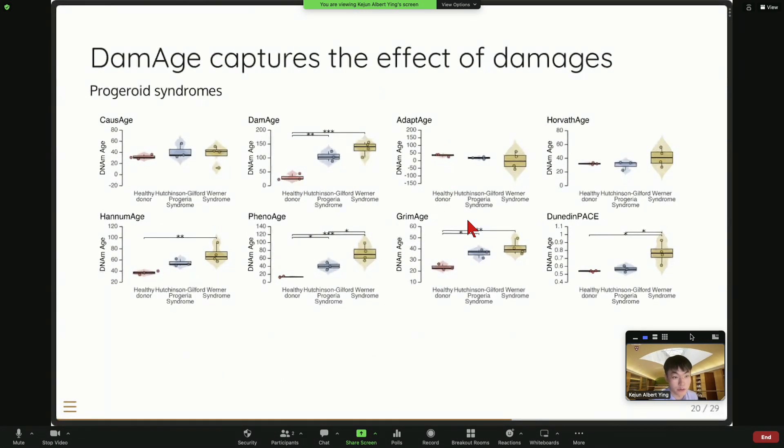And this is progeria syndrome. So we show that our clock and the damage is able to show that the people with this progeria syndrome, they are epigenetically older compared to the healthy control. And this effect is very hard to be detected by first generation clock. But usually it can be detected by second generation clock, like PhenoAge and GrimAge.